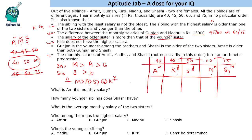Now let's answer the questions. Amrit's monthly salary is 40,000. How many younger siblings does Sashi have? Sashi is third in the age order, so she has two younger siblings. The average monthly salary of the two sisters: Sashi has 50,000 and Kirti has 45,000, total is 95,000, so the average is 47,500. Who has the highest salary? Gunjan has the highest salary of 75,000. And the youngest sibling is Kirti.